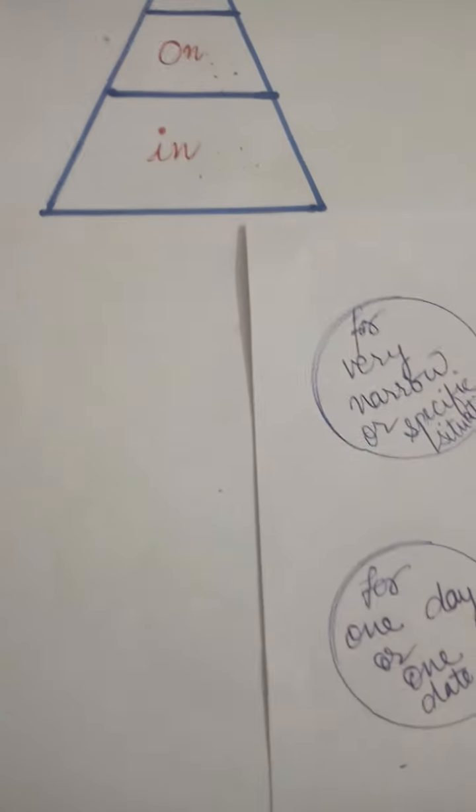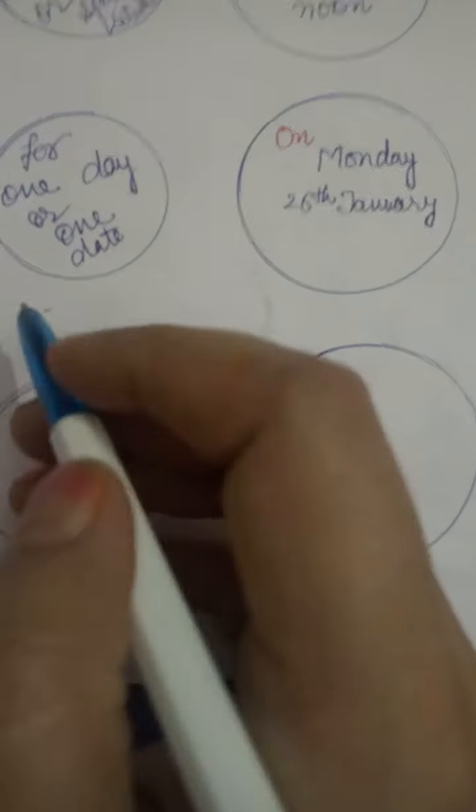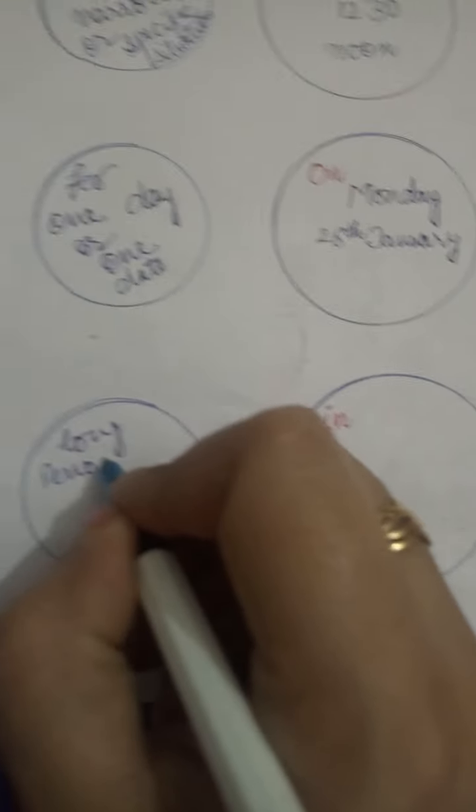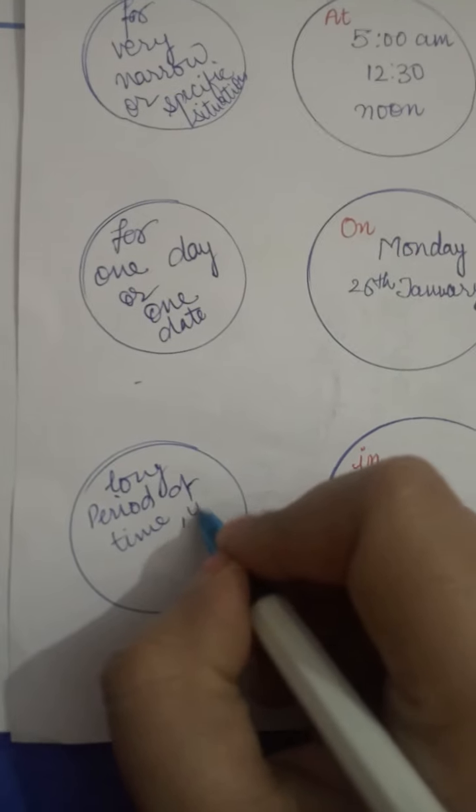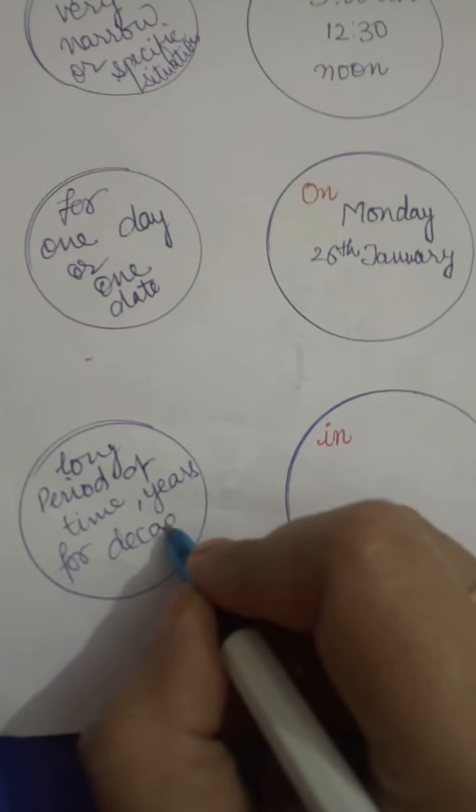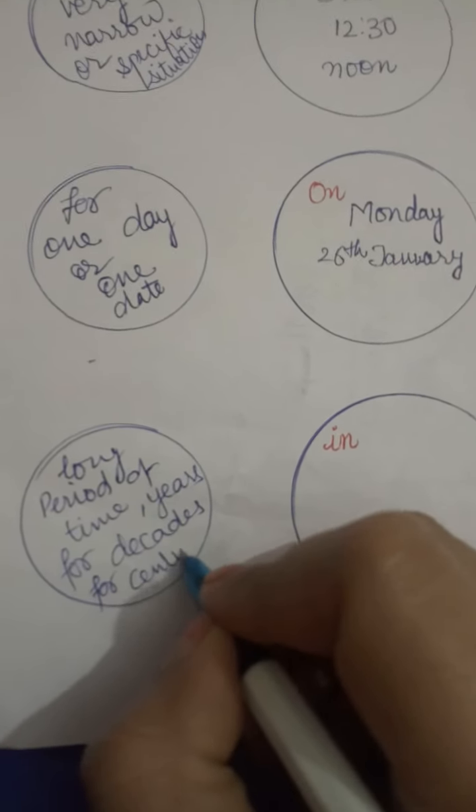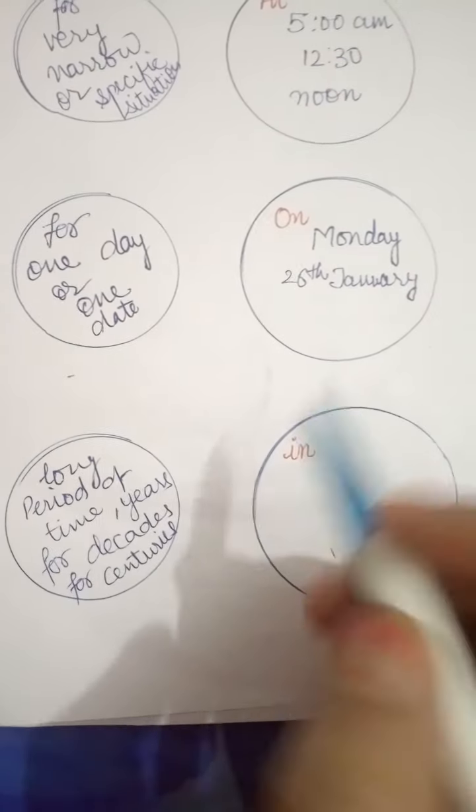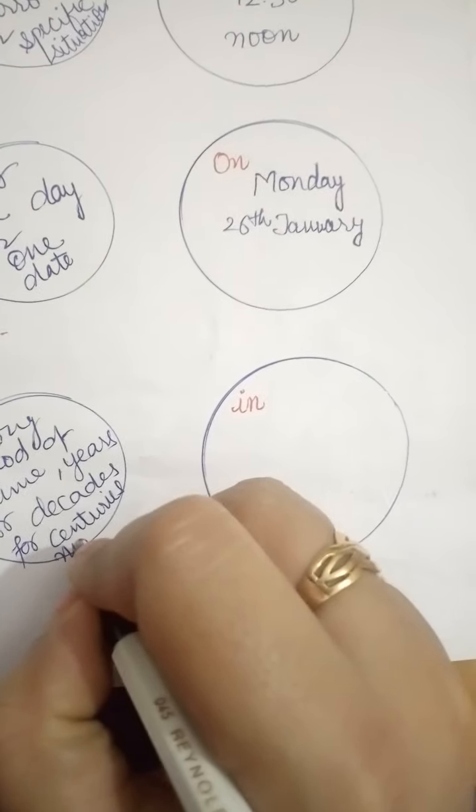So here we can write that in is used for long periods of time, for years, for decades, for centuries. It can also be used for months, so here we can write month also.